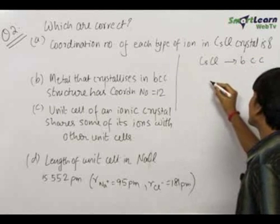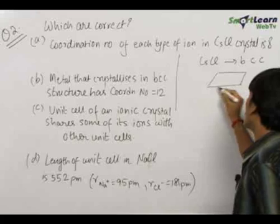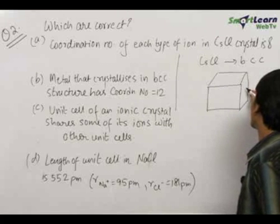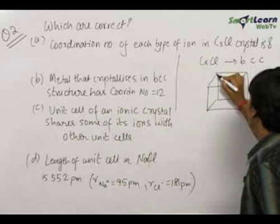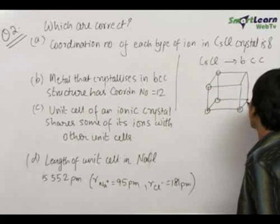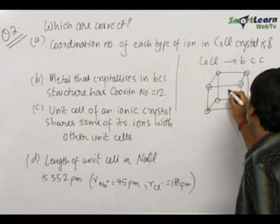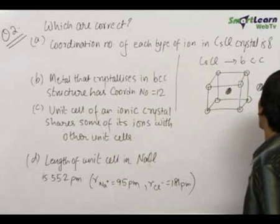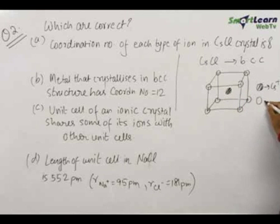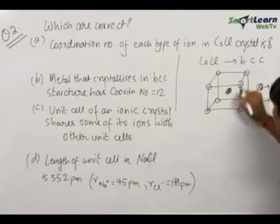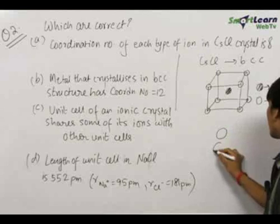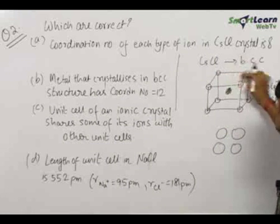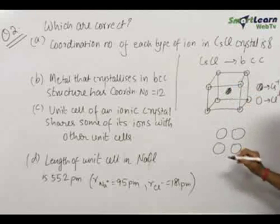In CsCl, the Cl⁻ ions are located on the corners and the Cs⁺ ion is at the center. So we have Cl⁻ at the corner points and Cs⁺ at the center. To find the coordination number, let us look at the body-centered cubic structure. This is the top view showing these four Cl⁻ ions.